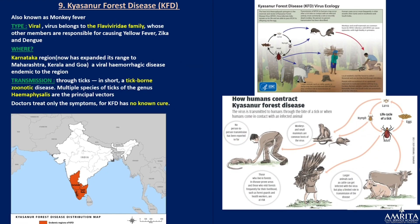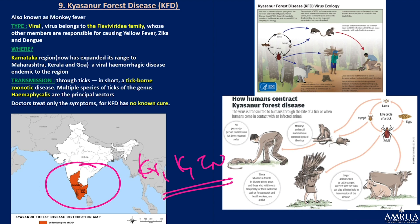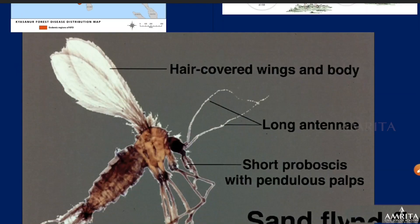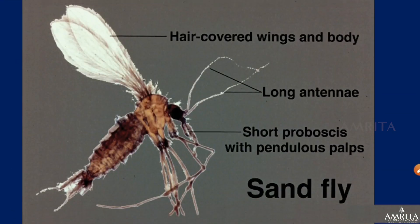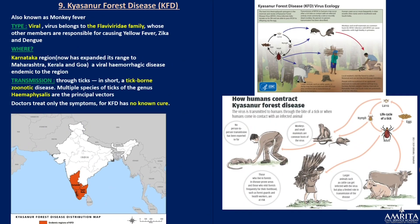Please differentiate diseases for which vaccines exist — like yellow fever — from those without vaccines. Ticks are responsible for Kyasanur Forest Disease (KFD), also known as monkey fever, endemic to Karnataka, Kerala, and Tamil Nadu. Multiple species of ticks cause this disease, and no human-to-human transmission has been found.